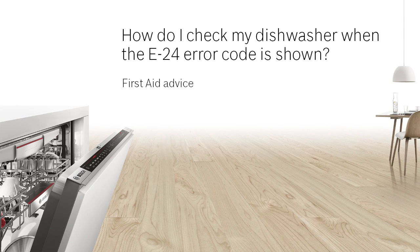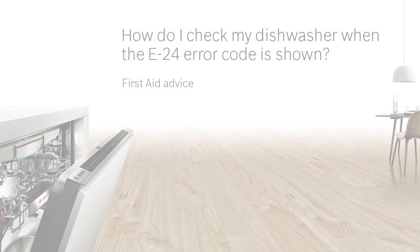How do I check my dishwasher when the E24 error code is shown? When the E24 error code is shown on your dishwasher's display, please switch off and unplug your appliance. This error code means that there is a water drainage issue.